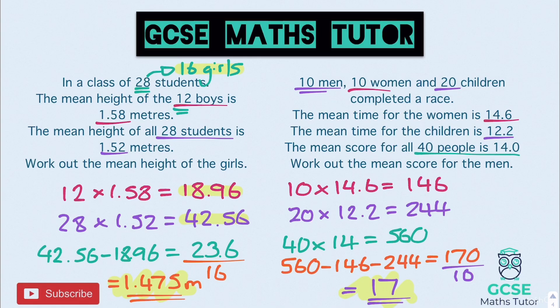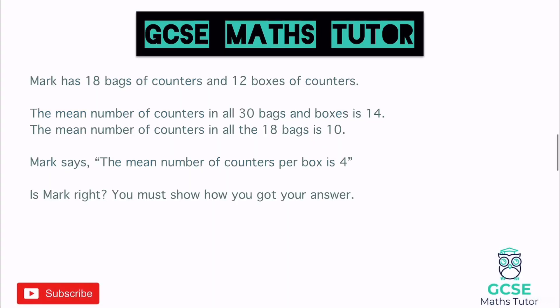Let's look at one more question before we finish. Mark has 18 bags of counters and 12 boxes of counters - similar to boys and girls but now it's bags and boxes. The mean number of counters in all 30 bags and boxes is 14. 18 plus 12 does make 30, so 30 times 14 gives us a total of 420 counters overall.